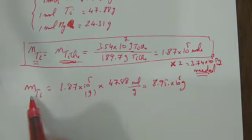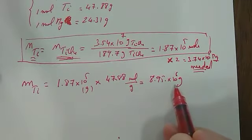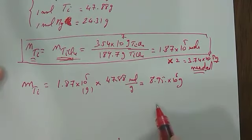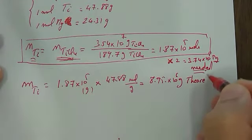Mass equals number of moles times molar mass, which equals 8.95 times 10^6 grams. This is the theoretical yield.